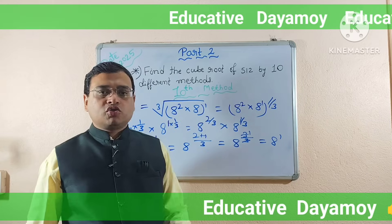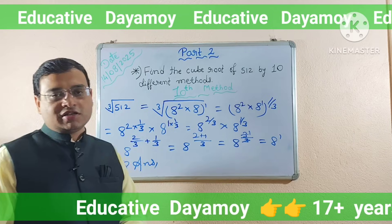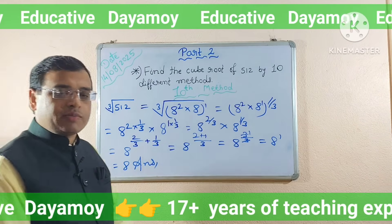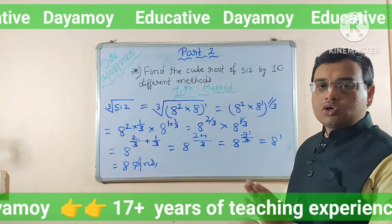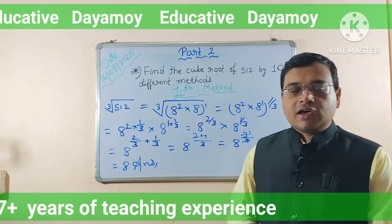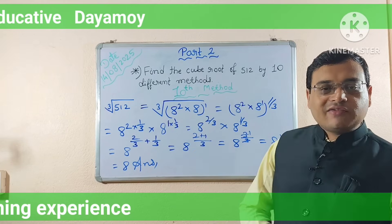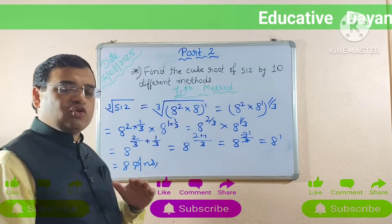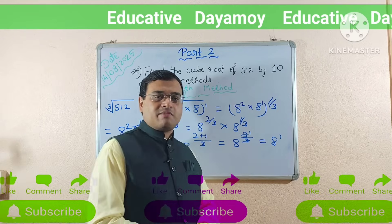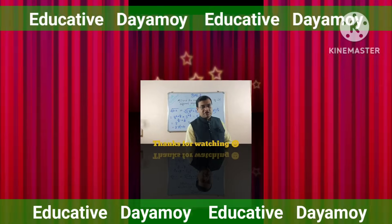So I have completed part 2 of cube root of 512 by 10 different methods. With this video, there are two parts: part 1 was released earlier on my YouTube channel, and this is part 2. I hope this video is very useful to you and that you have understood it well. Please give a like, share it with everyone in your contact, leave a comment in the comment box, and if you are new to my channel, don't forget to subscribe to get more videos like this. Till then, see you in the next video — bye bye.